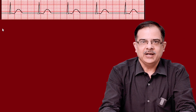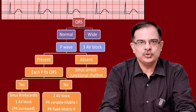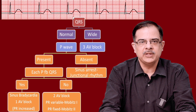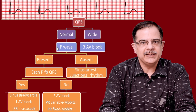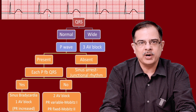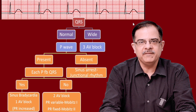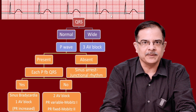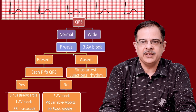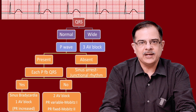In the next case, applying the same flowchart: QRS width is 2 mm — normal. Then identify the P wave. Between two QRS complexes there is only one wave, and it comes after the QRS, so it is a T wave. There is a flat line just before each QRS — no P wave is present. Since P wave is absent, the diagnosis is sinus arrest, meaning junctional rhythm.